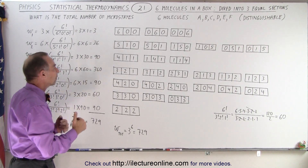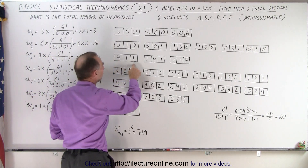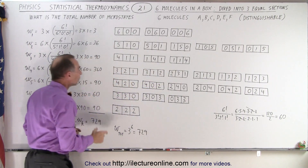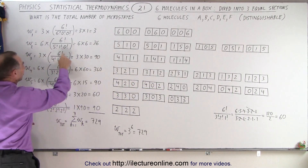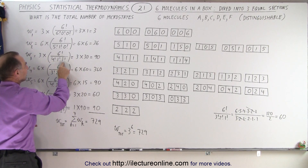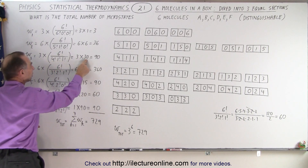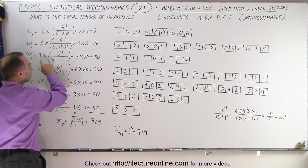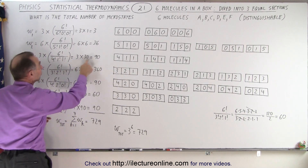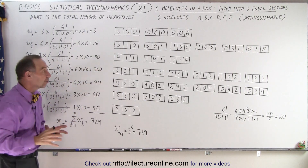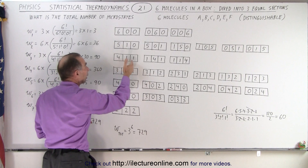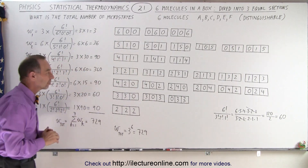In the next macrostate, where we have four, one, and one, we can have (4,1,1), (1,4,1), or (1,1,4). For each one of those, we have six factorial divided by four factorial, one factorial, one factorial, which equals 30. With three configurations, three times 30 gives 90 total microstates in the case where we have four in one section, one in the second, and one in the third.